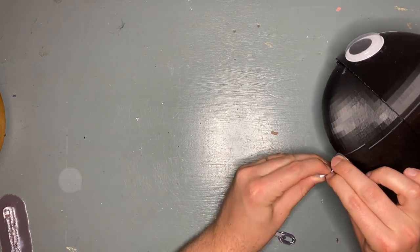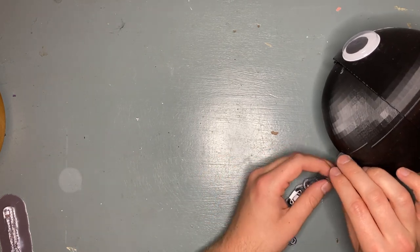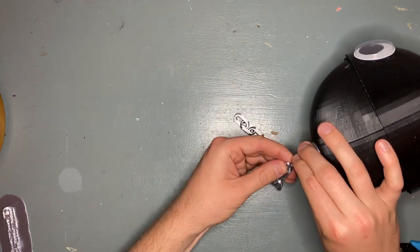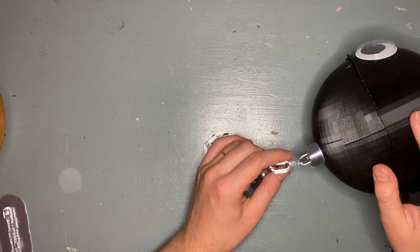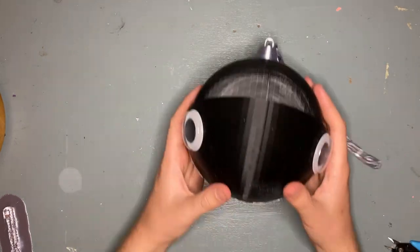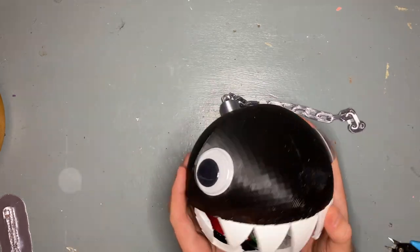Once that's done, you can attach the rest of the tail. And there we have it, our Chain Chomp. Came out looking pretty good.